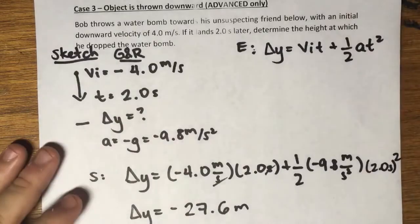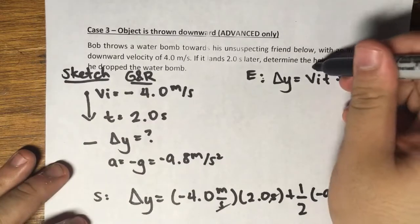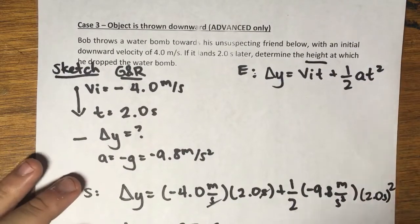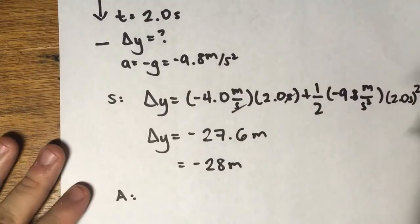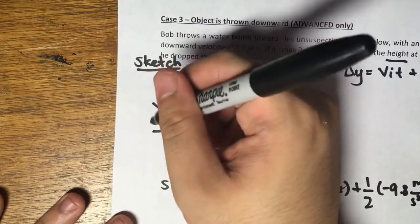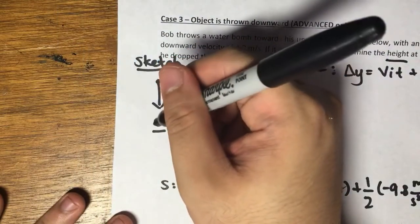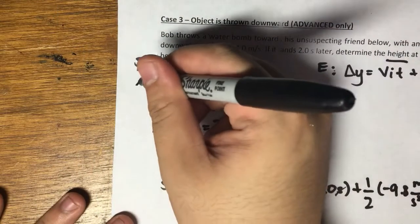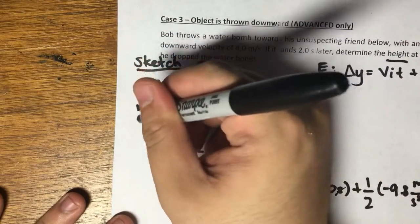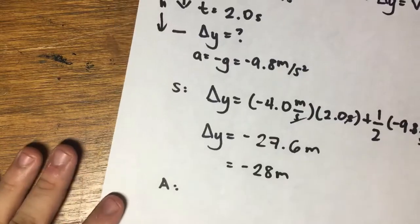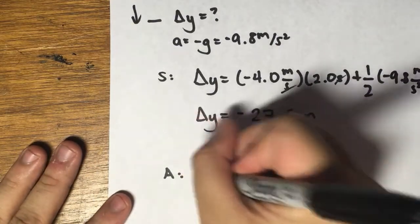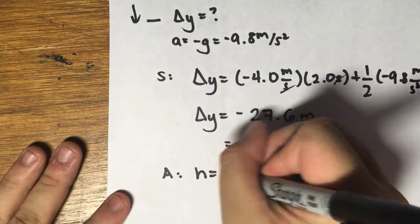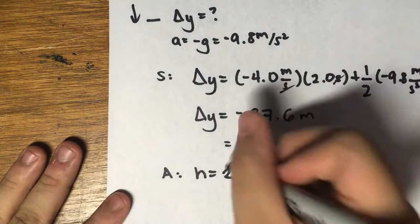However, we are being asked for the height. Remember, height is a dimension — it is a scalar quantity, and therefore it must be positive. It's negative because we're moving in the negative direction, but when we express the height, it should be positive. So the answer is that the height of the building from which he dropped the water bomb is 28 meters.